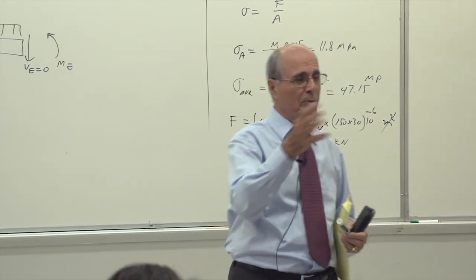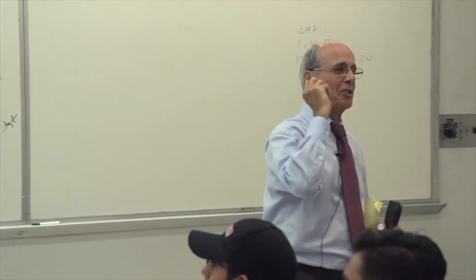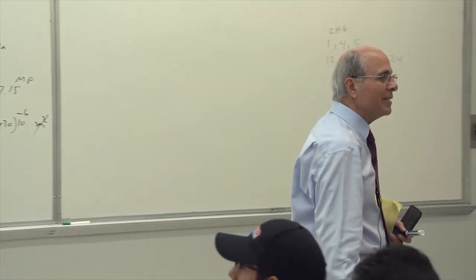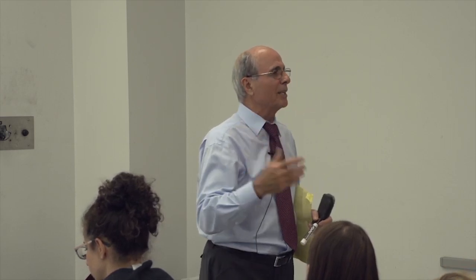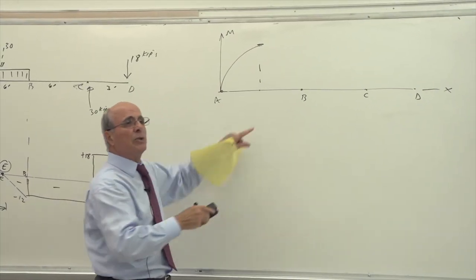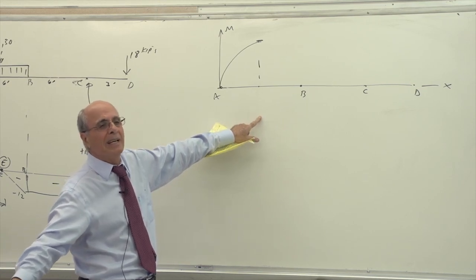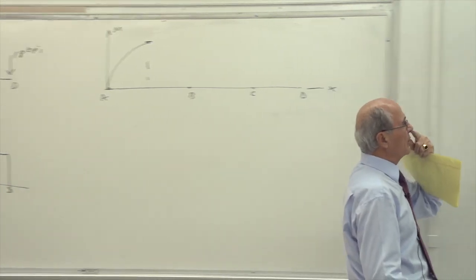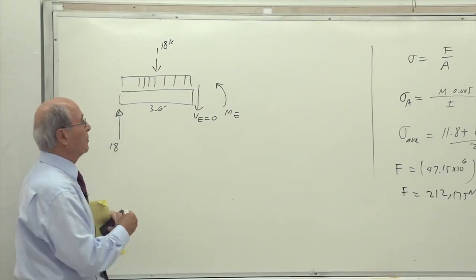Notice this moment is negative. If you want to design this beam, do you design it for plus 32 or minus 54? Minus 54 — because that's the maximum. At that section, if I cut the beam, the moment is 54, with tension on the top and compression on the bottom. For beam design you go to the highest value, and there's more to it that we'll discuss in design courses.